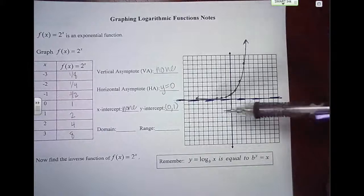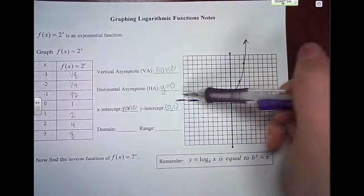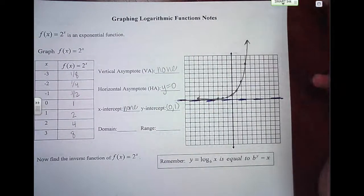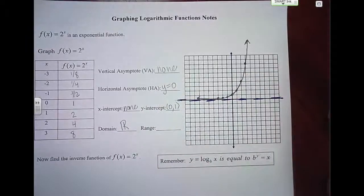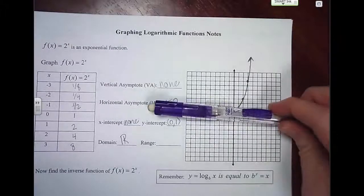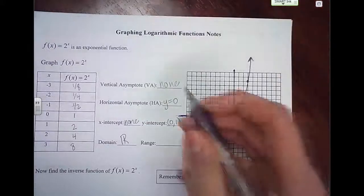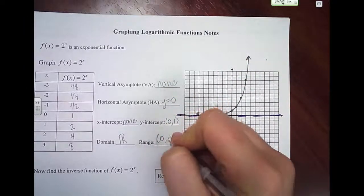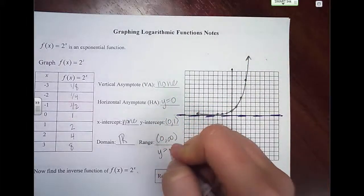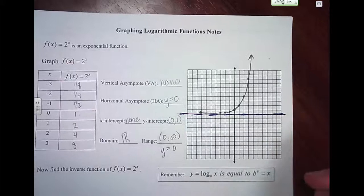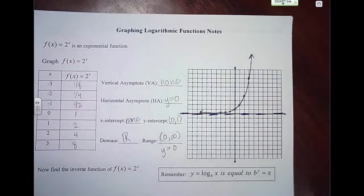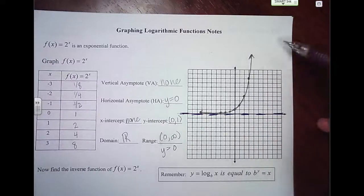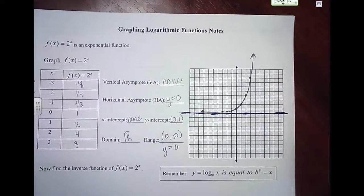Now, talking about domain and range: domain is x-values. In this case, it goes forever to the left and forever to the right, so you can plug in any x-value and it will work — domain is all real numbers. But the range is only values from 0 on up, so we say 0 to infinity with a parenthesis (not including 0), or y greater than 0. The basic shape of an exponential function starts here and goes up this way.